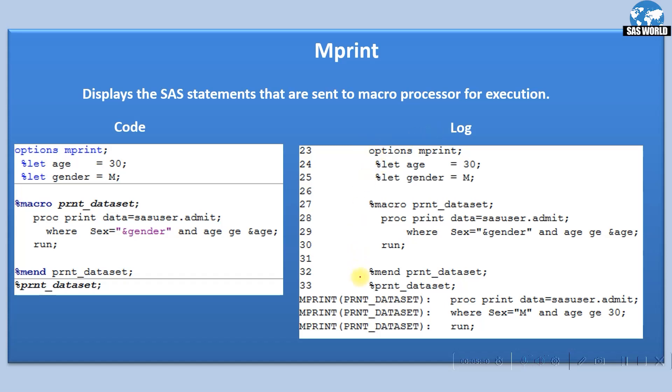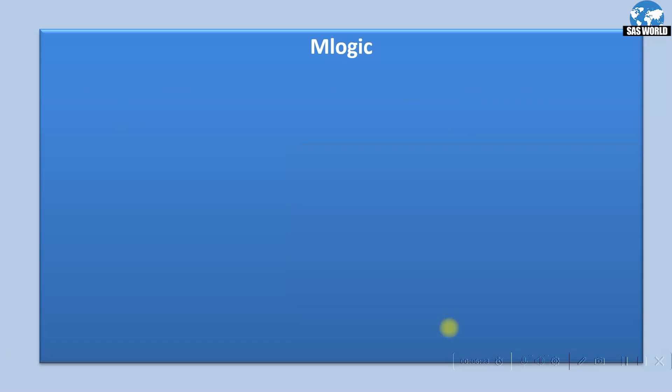Here is the program, which is exactly the same. This is the log. At the bottom, you can see with mprint these are the three lines that have been sent to macro processor. You can see what has been passed to SAS macro processor for execution.